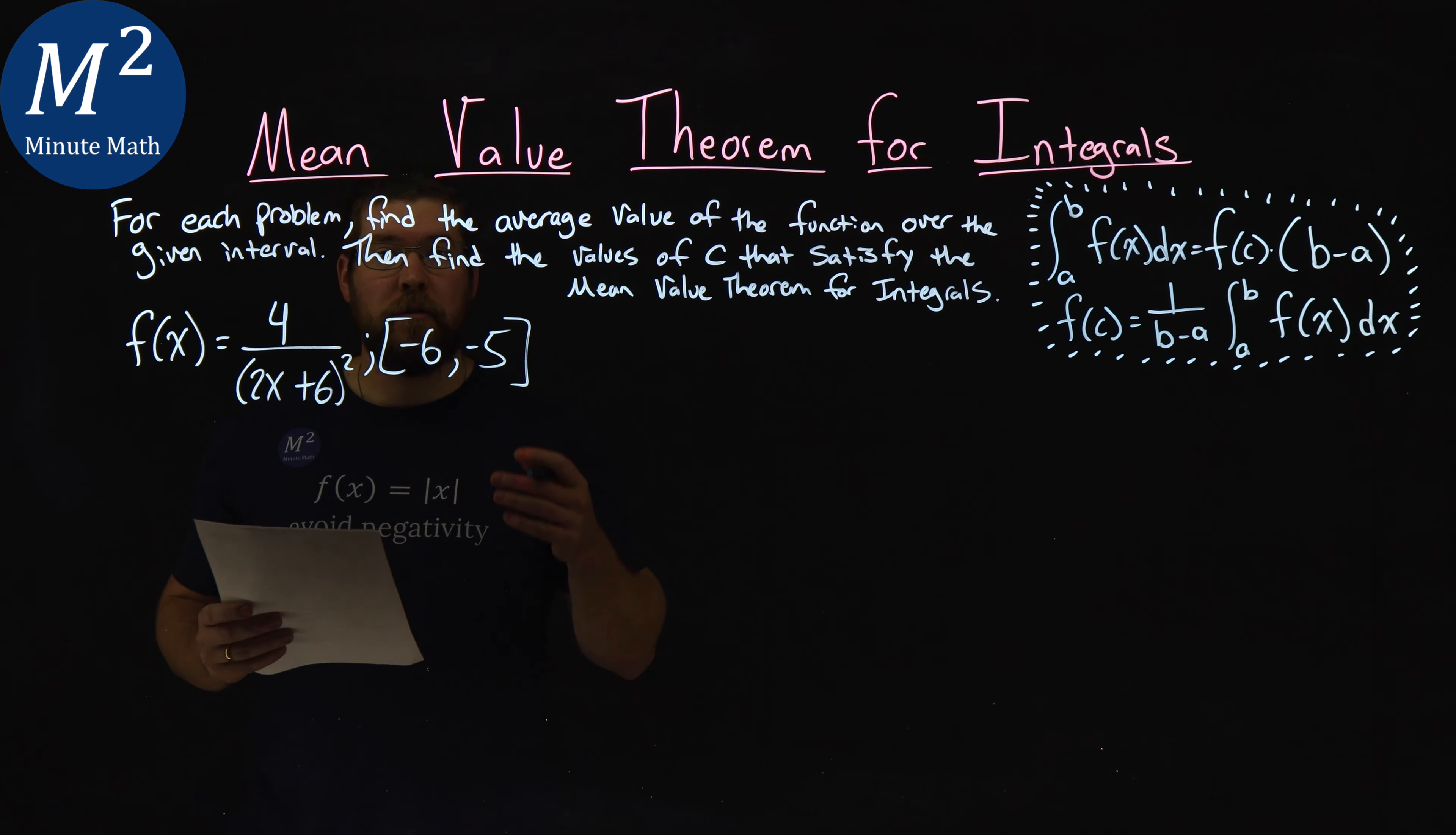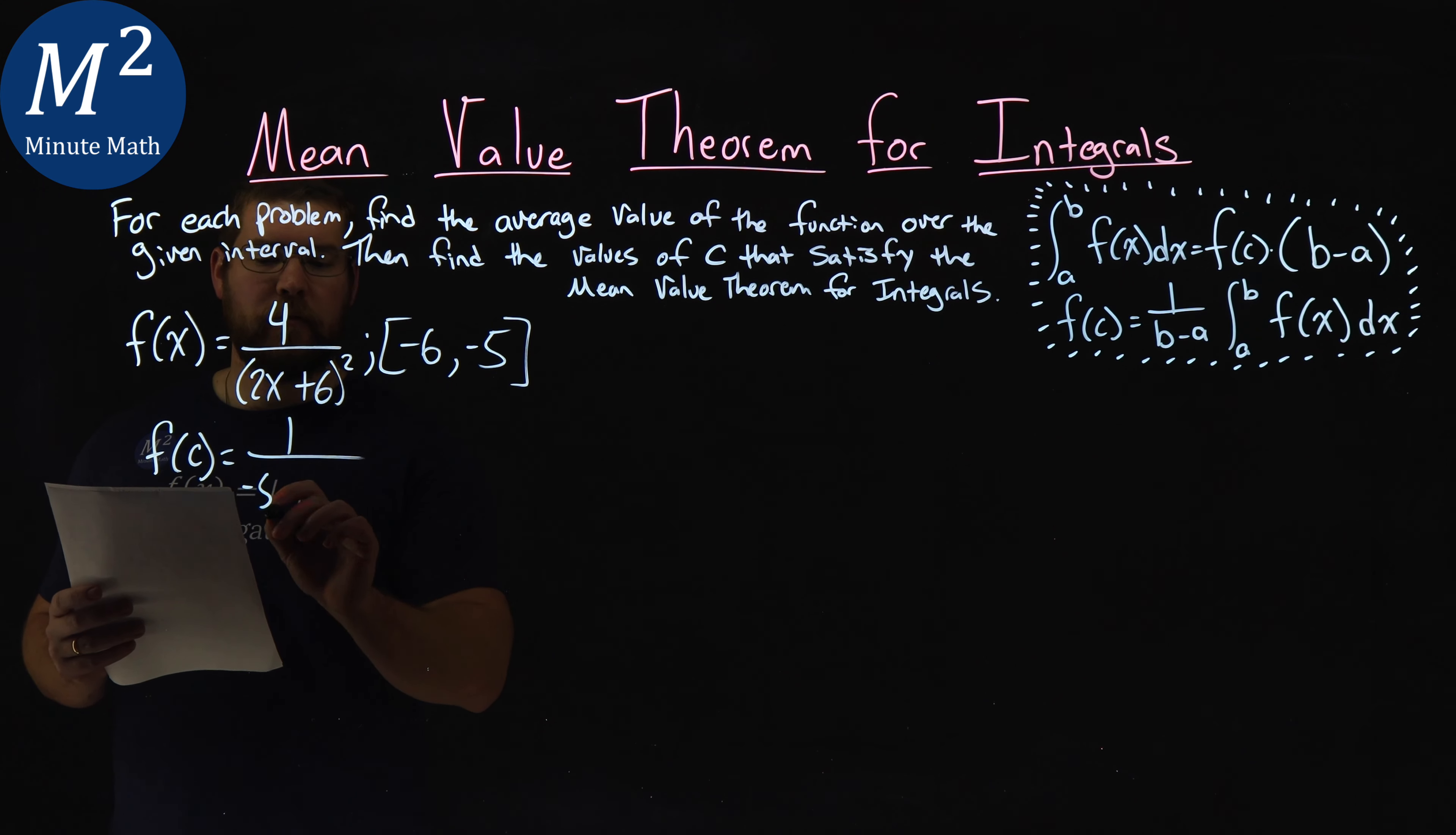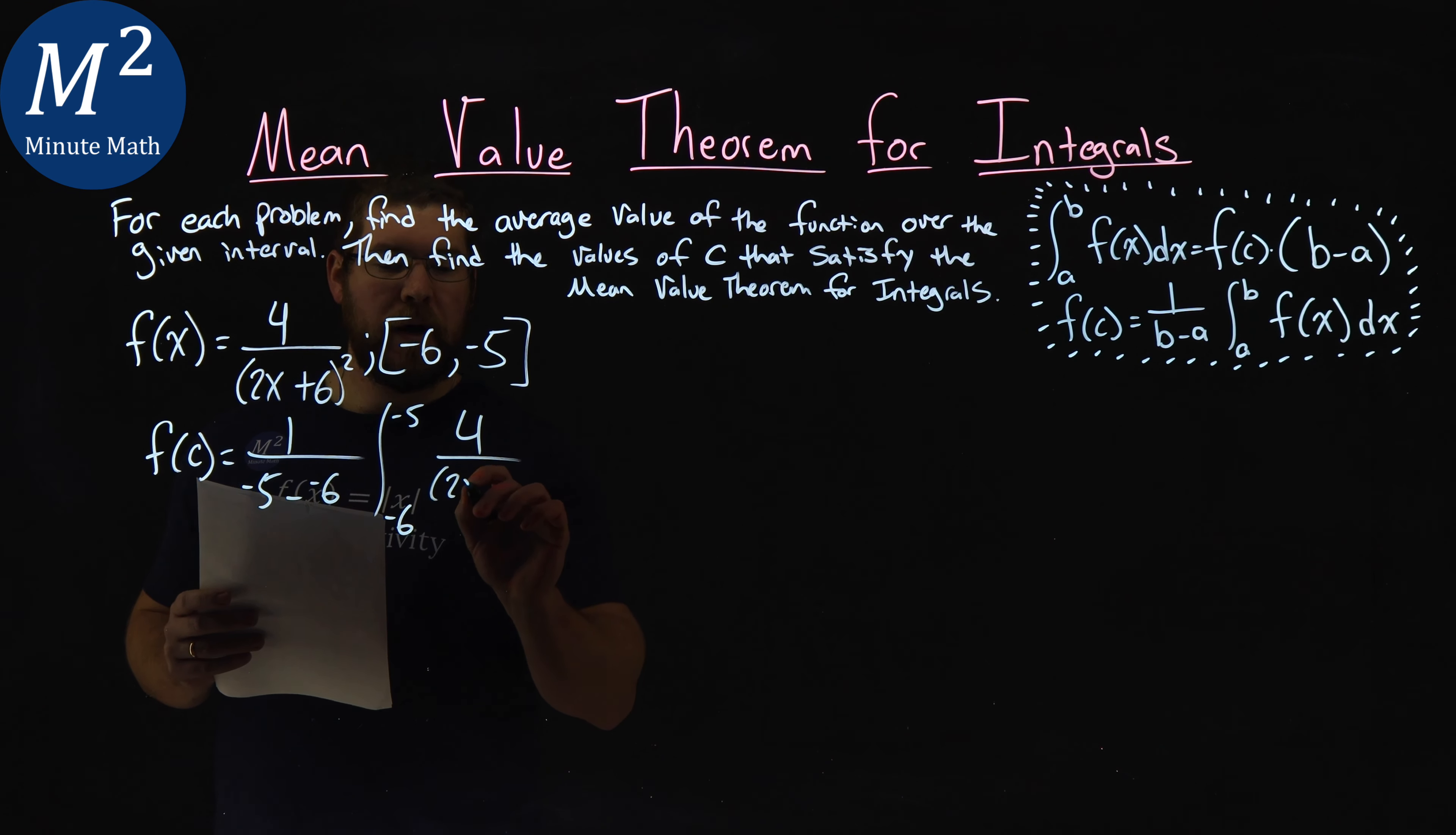First, let's go find the average value here, my f of c. So my f of c is equal to my formula, 1 over b minus a, negative 5 minus a negative 6, being the a value here. Integral from that interval, negative 6 to negative 5, of my function, 4 over 2x plus 6 squared dx.